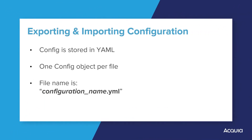When importing or exporting Drupal configuration, the file storage format is YAML. Configuration is divided into files, with each file containing one configuration object. The file name for a configuration object is equal to the unique name of the configuration, ending with the .yml extension. For example, the configuration file for the RSVPList module we will create soon is called RSVPList.settings.yaml. Any default configuration files for each module are placed in its config/install directory.